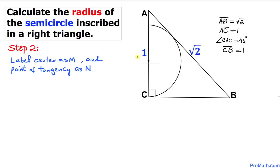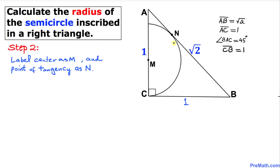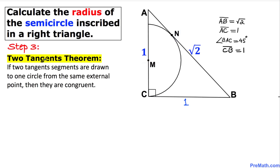In the next step, we are going to label the center of the semicircle as M, and the point of tangency as point N. Here is our updated graph with center M and point of tangency N.